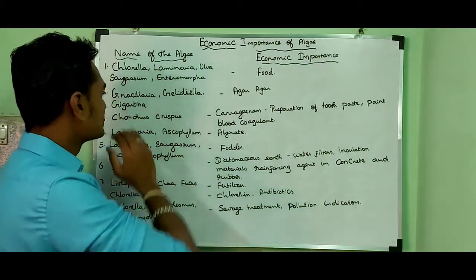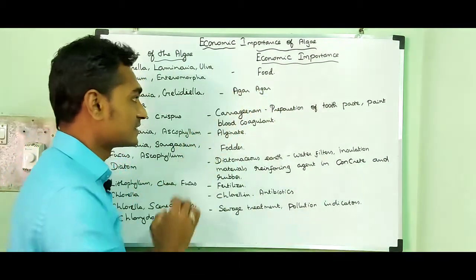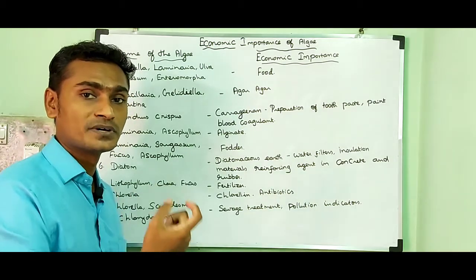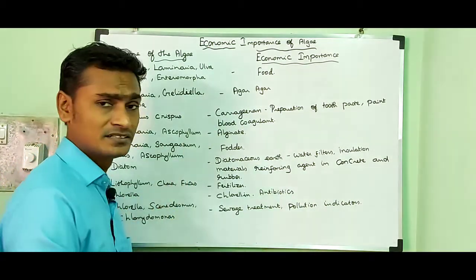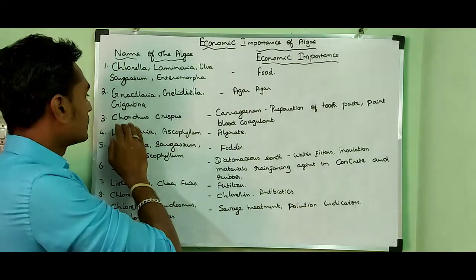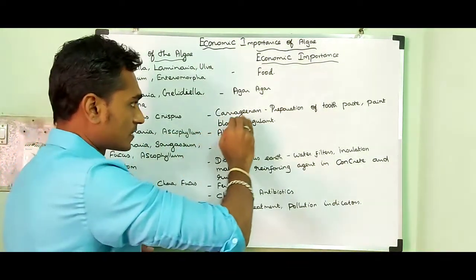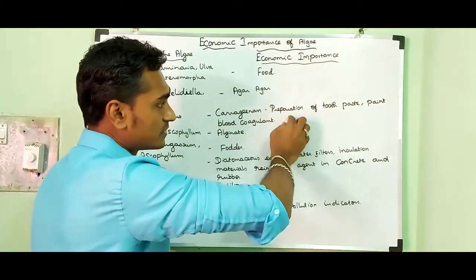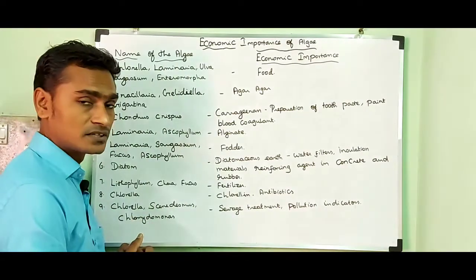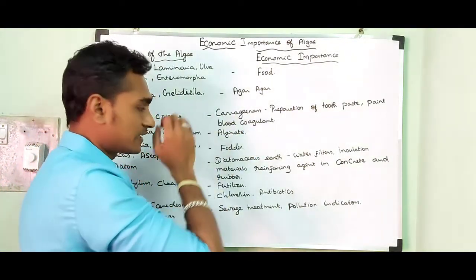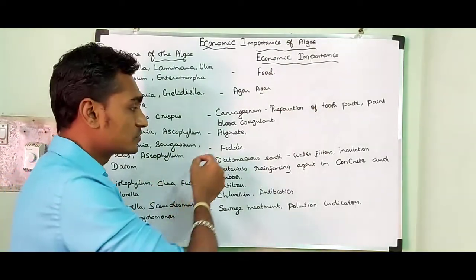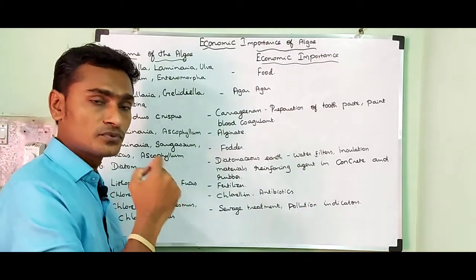Gracilaria, Gelidella and Gigartina are algae used to extract agar-agar — an important component in microbiology labs used to prepare culture media. It is also used in the textile industry, packaged canned food and cosmetics. Chondrus crispus is an algae used to extract carrageenan, which is used in preparation of toothpaste, paint and blood coagulant. Laminaria and Ascophyllum are used to produce alginate — a compound used in ice cream and paints as an emulsifier and also to produce flame-proof fabrics.